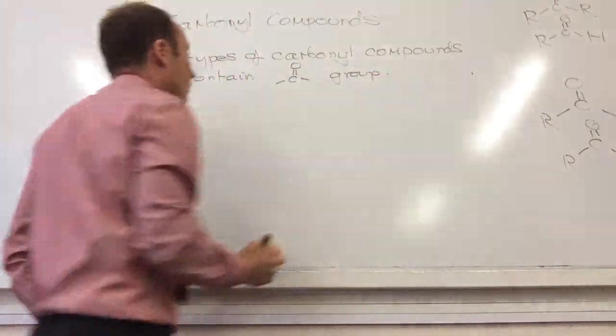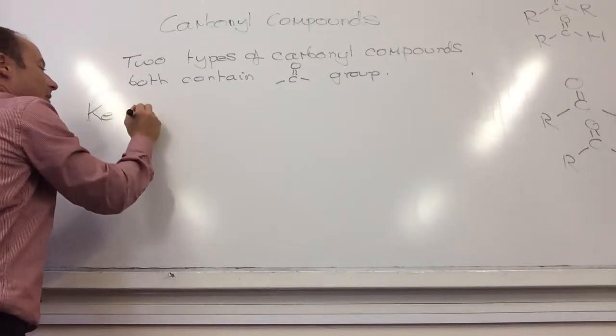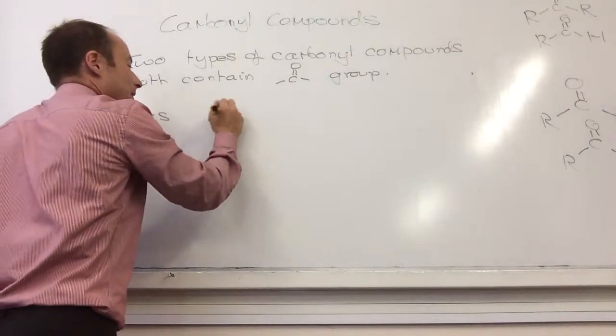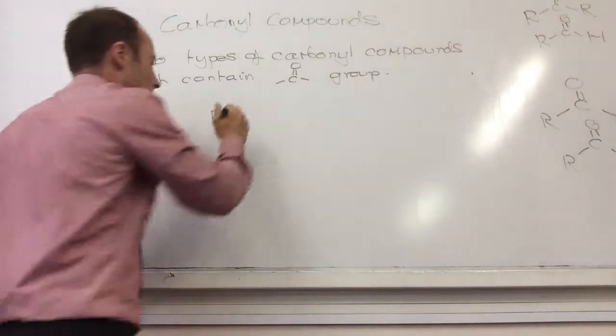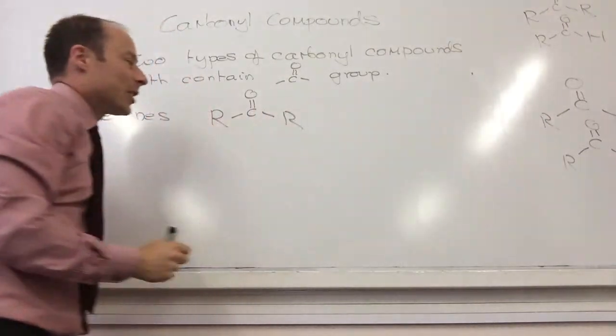The two types are ketones and aldehydes. So we've got ketones, where you have some carbon chain with a carbon double bond O, and then another carbon chain.